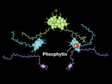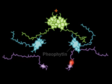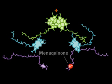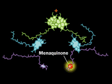Because the chlorophyll loses an electron, it is now positively charged. The excited electron passes to another accessory pigment, menaquinone, exciting it.